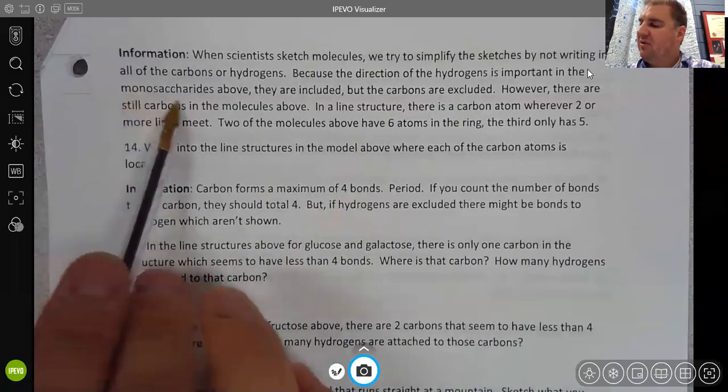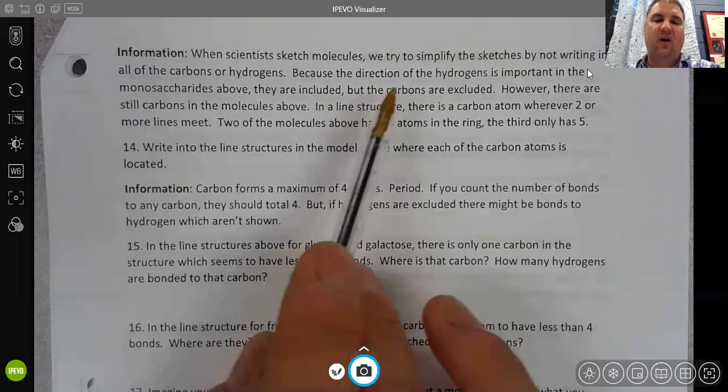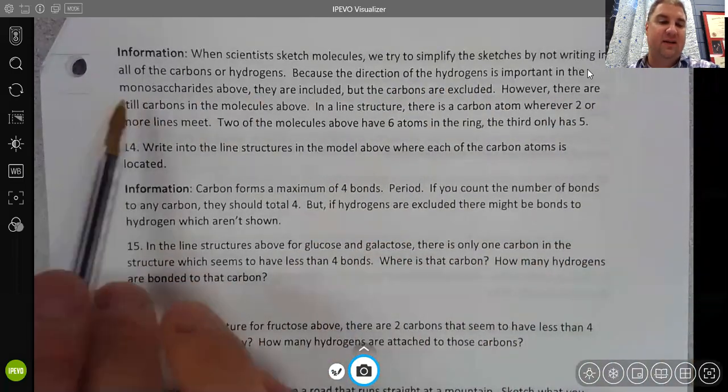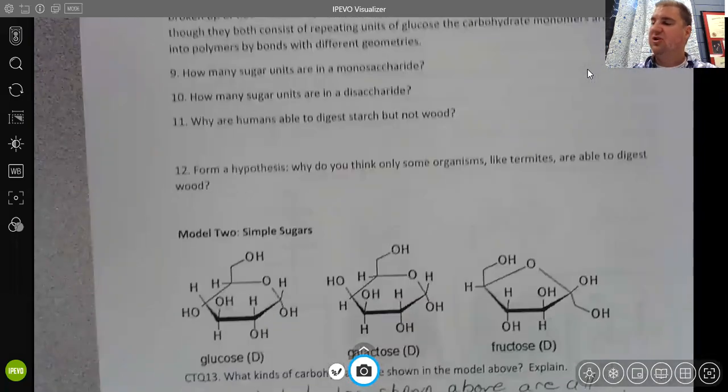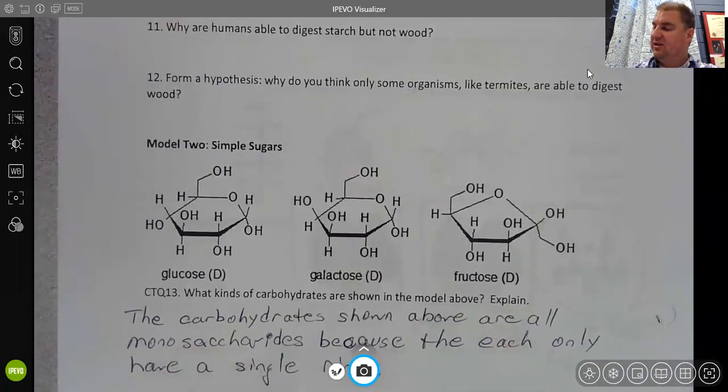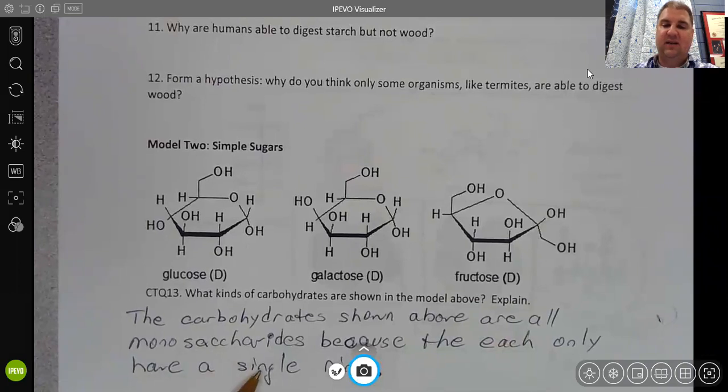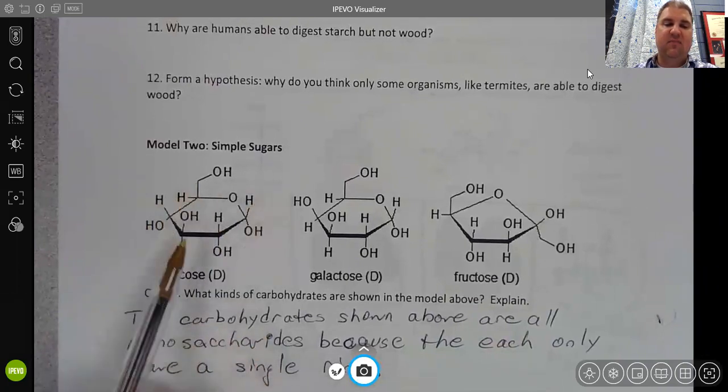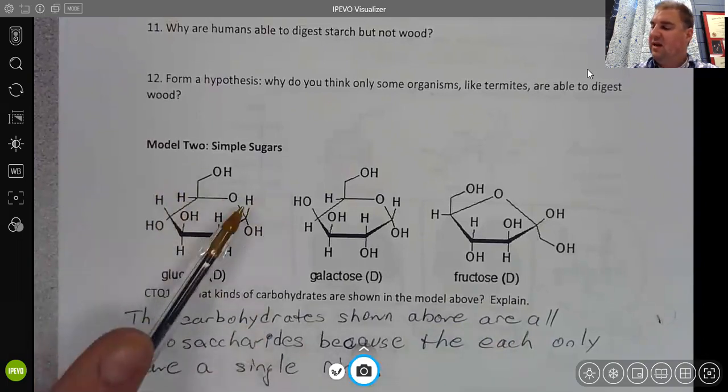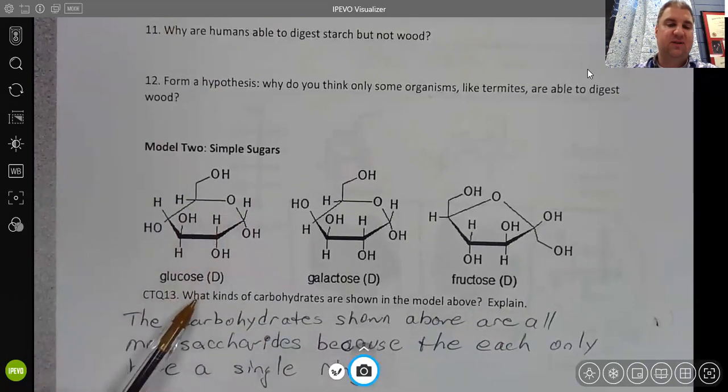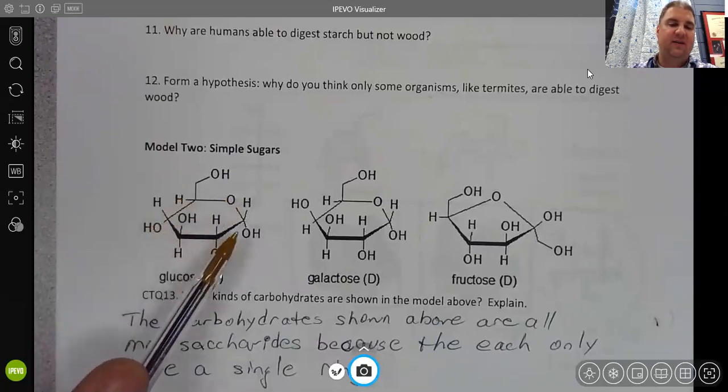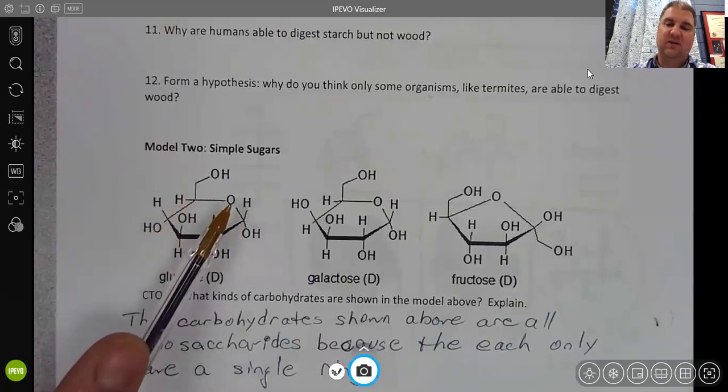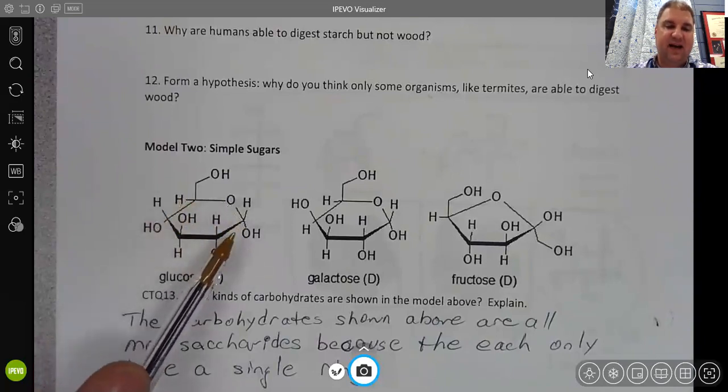The other thing to pick up on here is that information is confirming for you that these are monosaccharides above. You should not use that in part of your explanation here, because the idea is that you should be able to identify that these are monosaccharides based on what you can see in the molecule. Now this sugar here, this glucose, it has one, two, three, four, five, six, back to the first one. So it has six atoms in the ring.